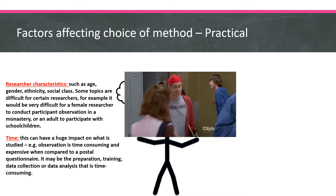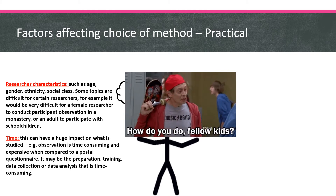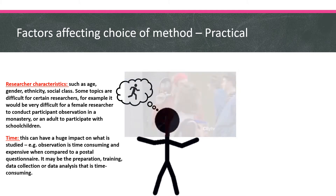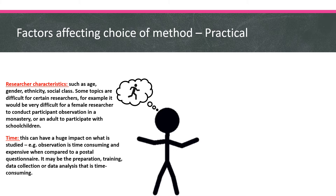Your researcher characteristics also play a role. It's your characteristics as a researcher — your age, gender, ethnicity or social class. If you are trying to go undercover and do participant observation, your social characteristics will either be a barrier or will help you engage in the investigation. For example, an adult researcher trying to study the experiences of children is not going to be able to do participant observation and blend in with the group.